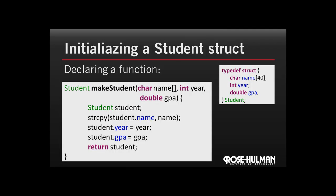Notice that this function returns a struct. C only allows us to return one thing from a function. Without structs, we'd be trying to return the three pieces of data individually, and that's impossible in C. For those of you familiar with Java, you'll note that this is very similar to a constructor.